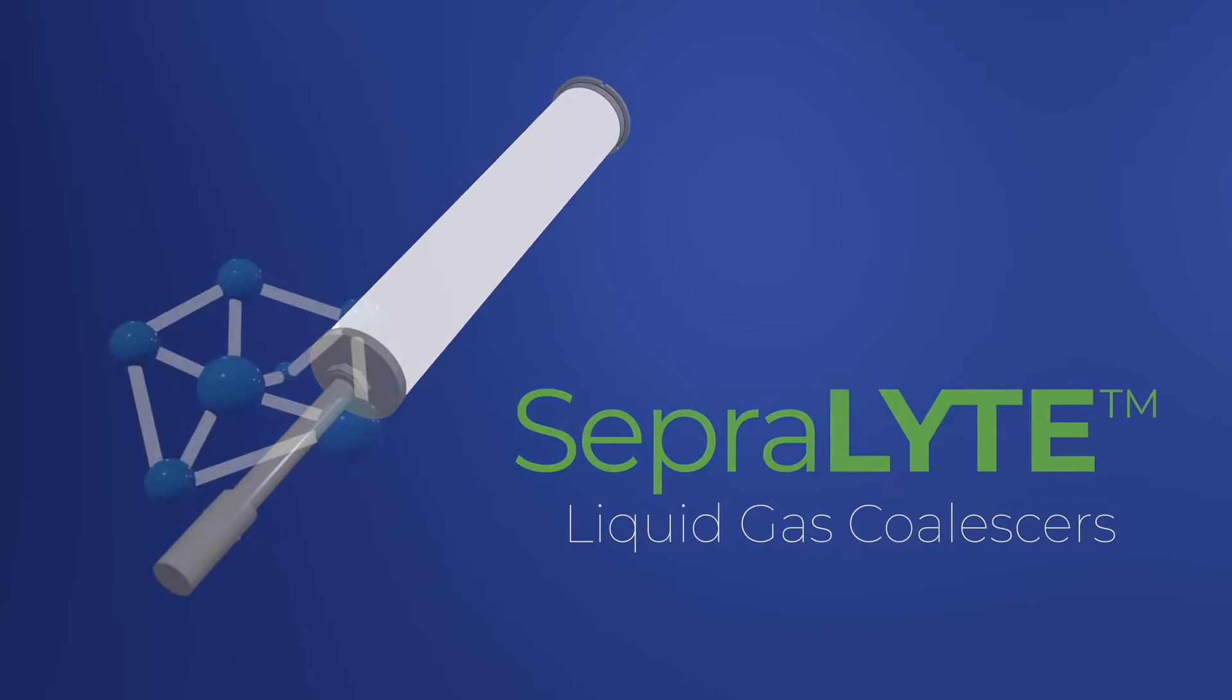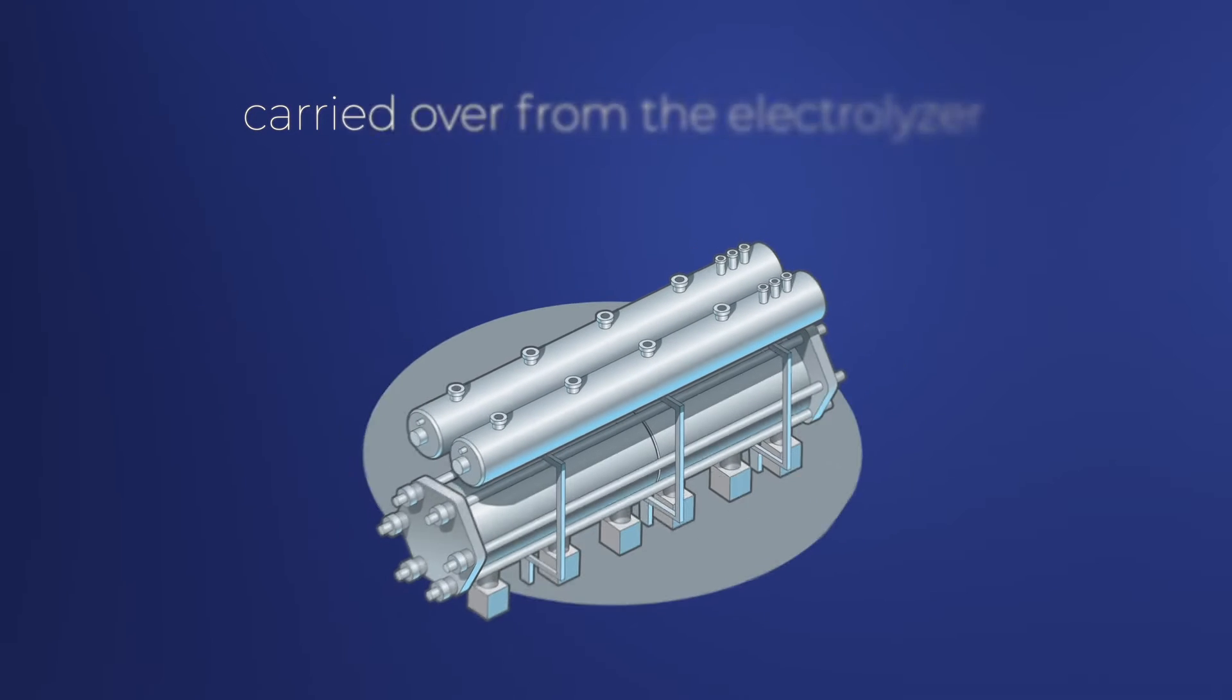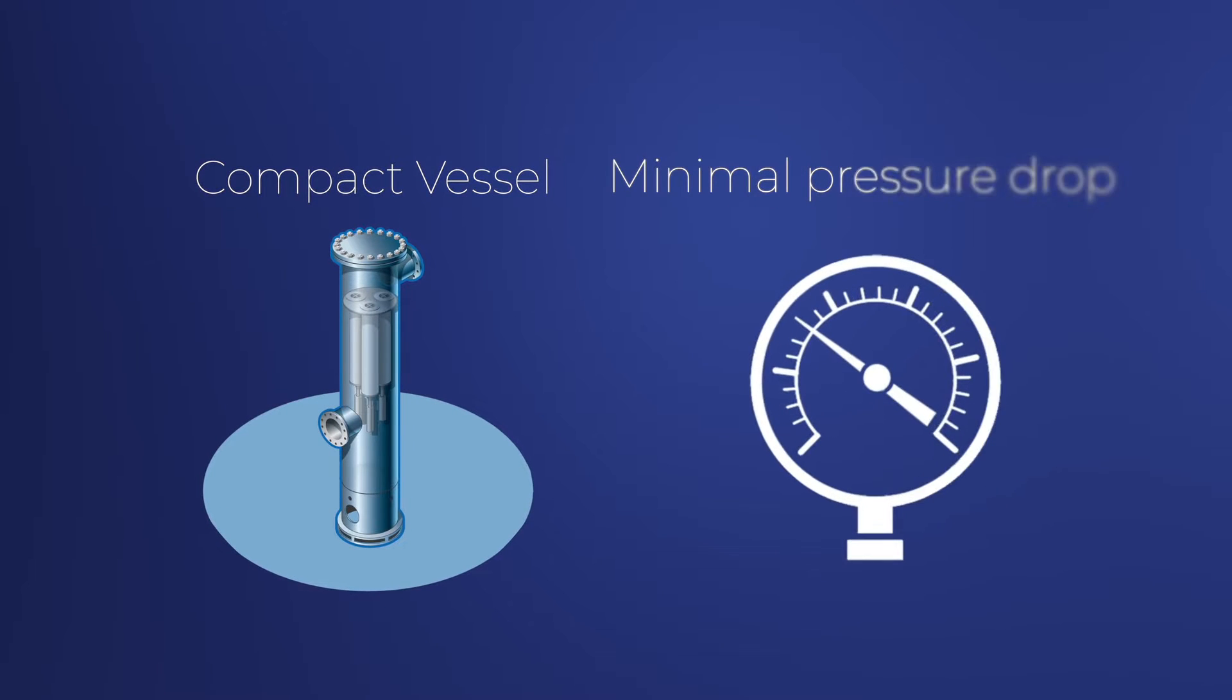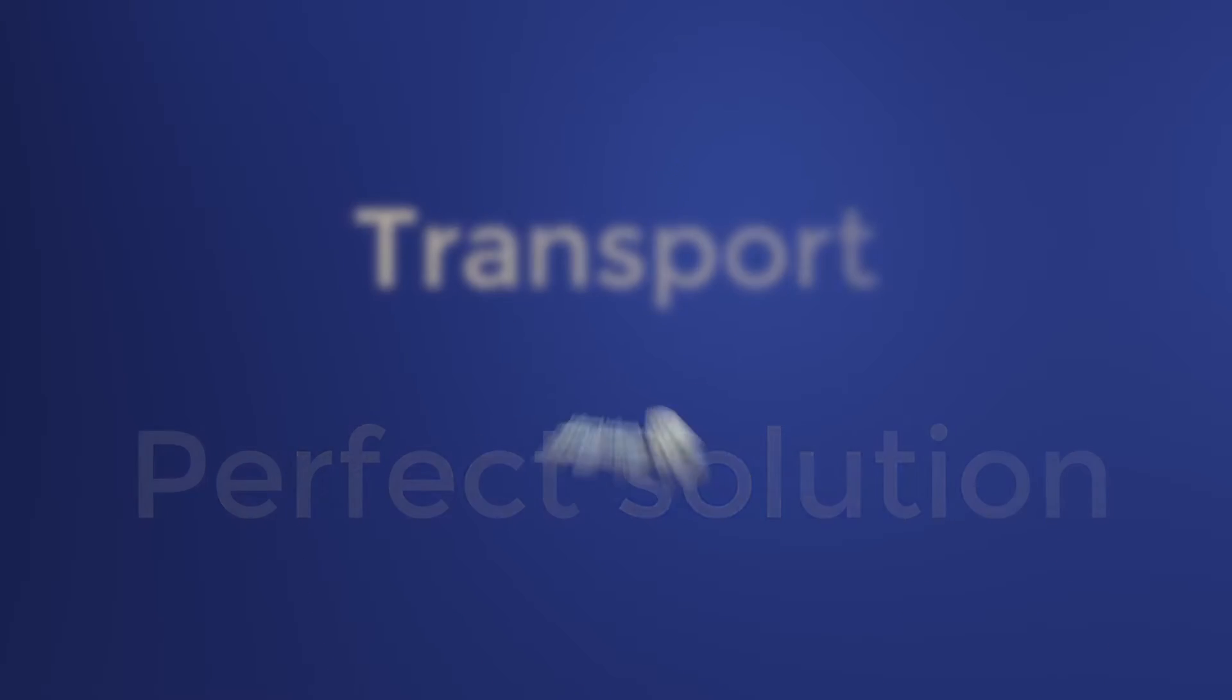Seprolite liquid gas coalescers remove caustic electrolytes that are carried over from the electrolyzer as liquid aerosols in hydrogen gas. These coalescers achieve this within a compact vessel and with minimal pressure drop, making it the perfect solution for scalability and transport.